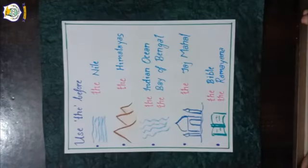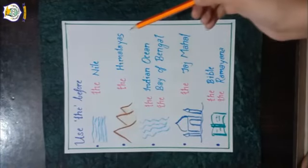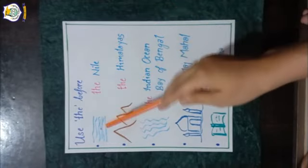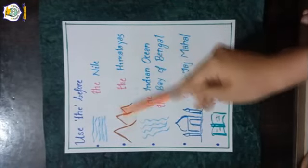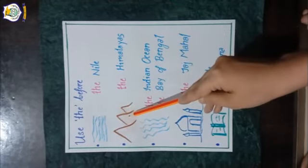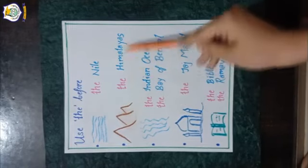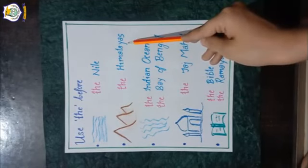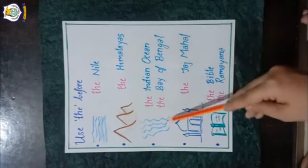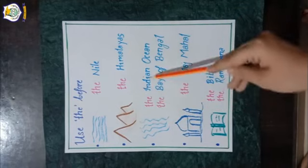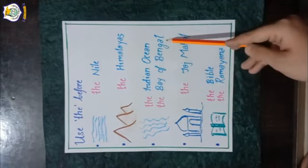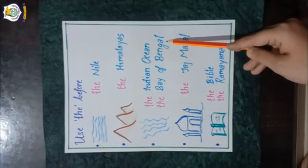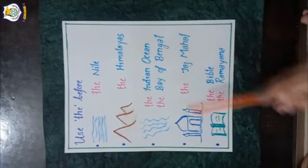'The' is used before the names of rivers like the Nile, mountain ranges like the Himalayas, seas and oceans like the Indian Ocean and the Bay of Bengal, and famous buildings and monuments like the Taj Mahal.